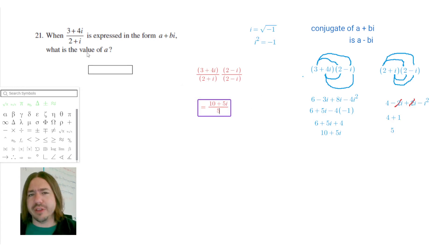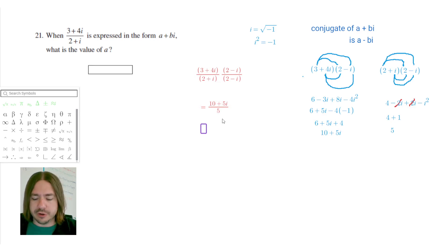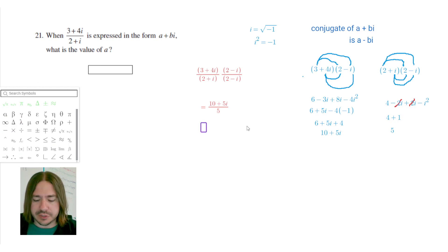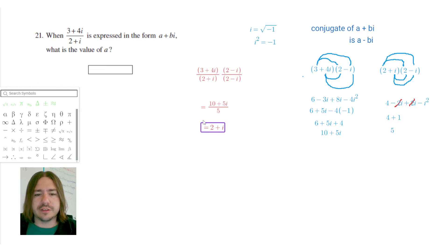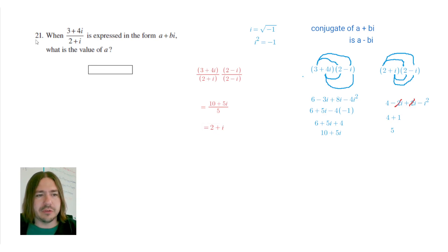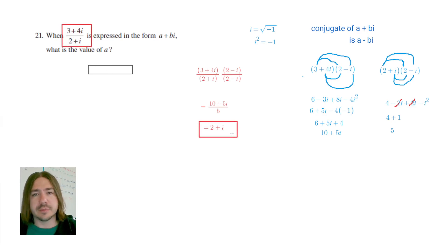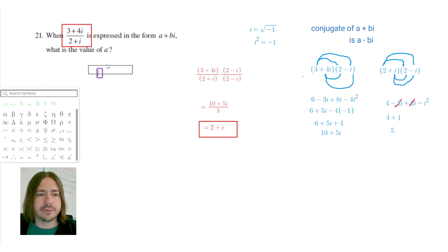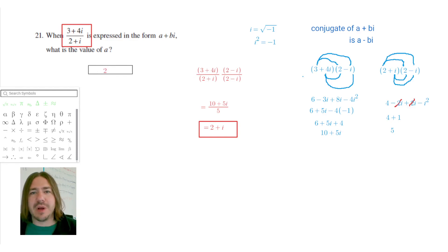Now that the denominator is a rational number, I can divide both terms by 5. So 10 divided by 5 is 2, and 5i divided by 5 is just i. This gives us 2 plus i. Our original expression equals this simplified form, and the question asks for the value of a — the real part — which is 2. And that's it for number 21, thanks for watching!